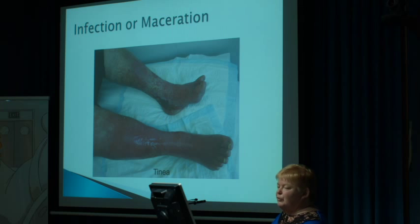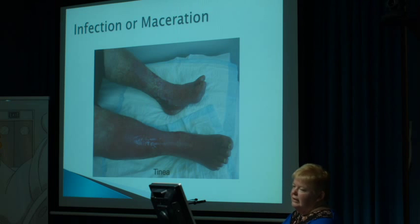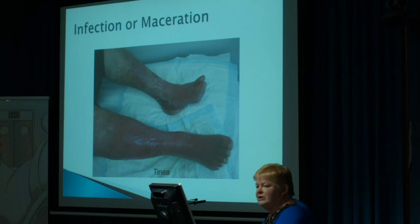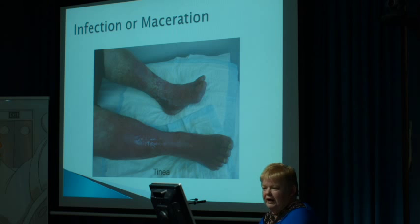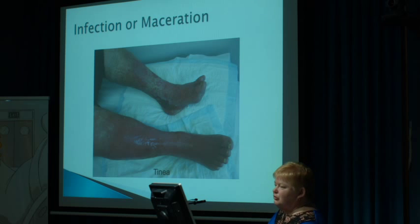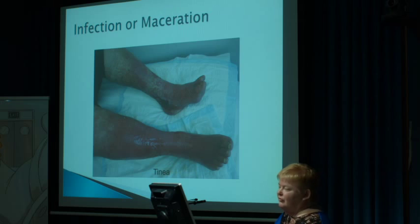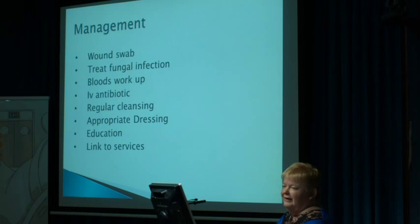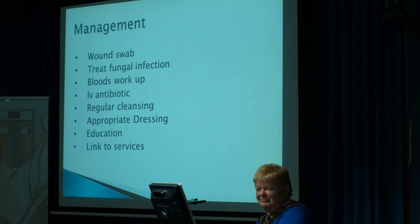We did a swab and grew back a staph infection. We did cleansing, fixed the slough off the other leg, and healed it. But he had tinea, which was probably the primary cause, because he couldn't get down to clean between his toes and he didn't care. We had to deal with the whole picture. We cured the right leg, but he went home still with an ulcer on the left one. He's another frequent flyer who comes back with chronic-type cellulitis. Despite being diabetic, he still has all his toes — which is remarkable when you meet the man.